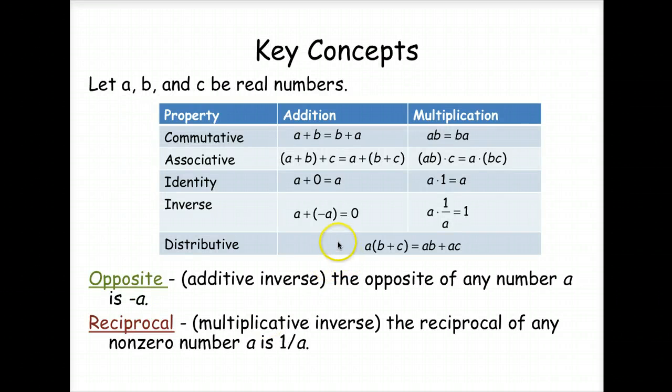Okay, now for the second part, let's look at properties of numbers. So we're going to let A, B, and C represent real numbers. And we're going to look at the properties of the commutative, associative, identity, inverse, and distributive properties. These properties are true for addition and multiplication.